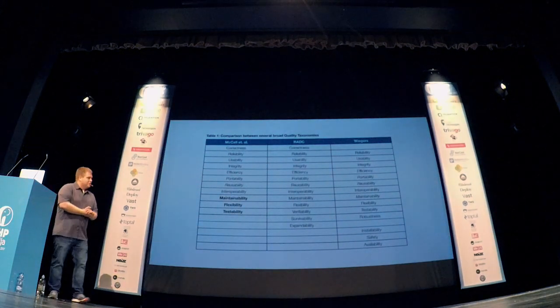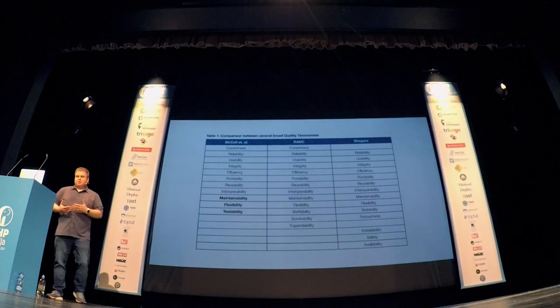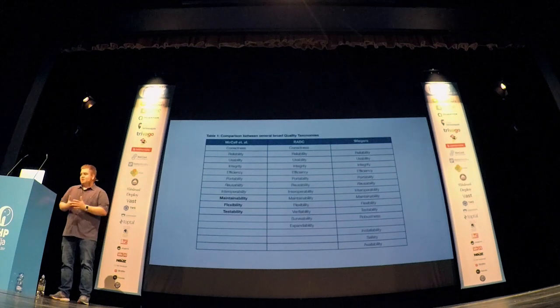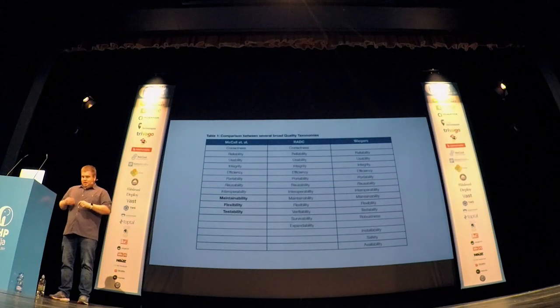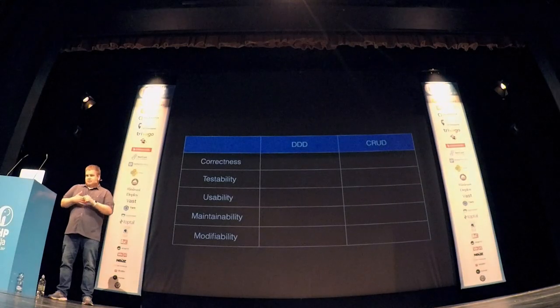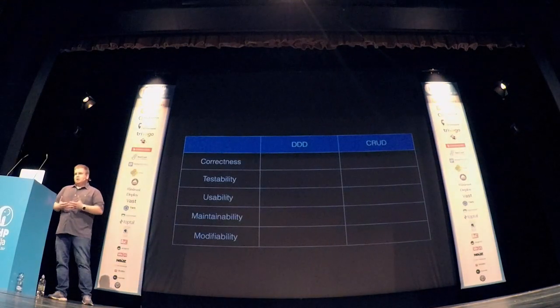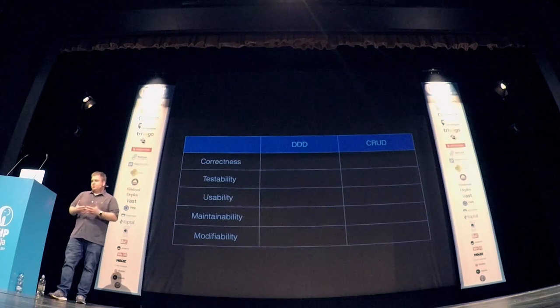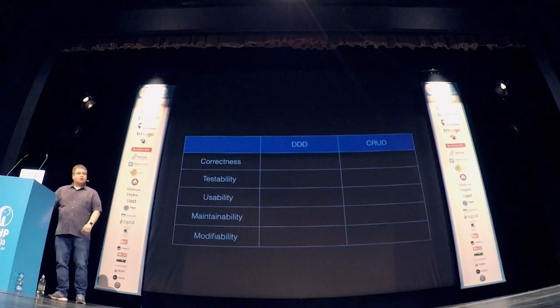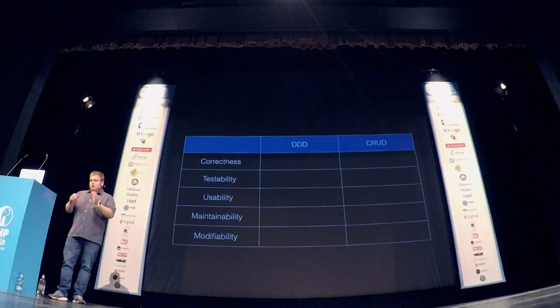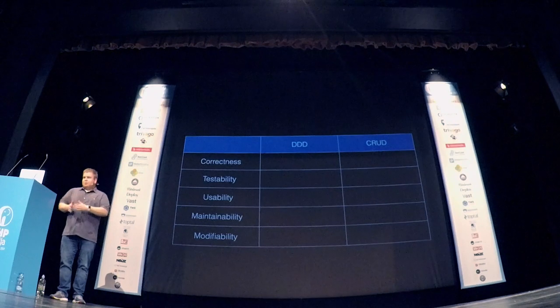How do we define what is good software? There have been plenty of books talking about factors in software quality. I'm going to pick what I think are the most important five when it comes to domain-driven design: correctness, testability, usability, maintainability, and modifiability. I'm going to compare a domain-driven design app against a CRUD app — or as the DDD community calls it, a big ball of mud, which is a conglomeration of code all thrown together that hardly ever works.